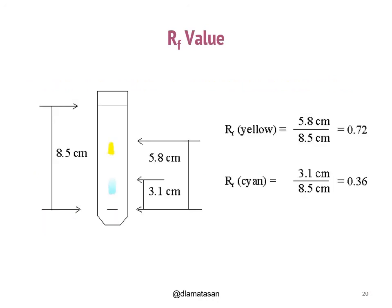For instance, in this example we have two spots: blue and yellow. Before calculating the RF for both spots, it is imperative to know the distance traveled by the solvent — in this case, 8.5, which is the length between the baseline and the solvent front. Then we measure the distance traveled by each spot. By calculating the RF, we can see that the yellow spot is more soluble in the solvent chosen, as its RF is higher than that of the blue spot.